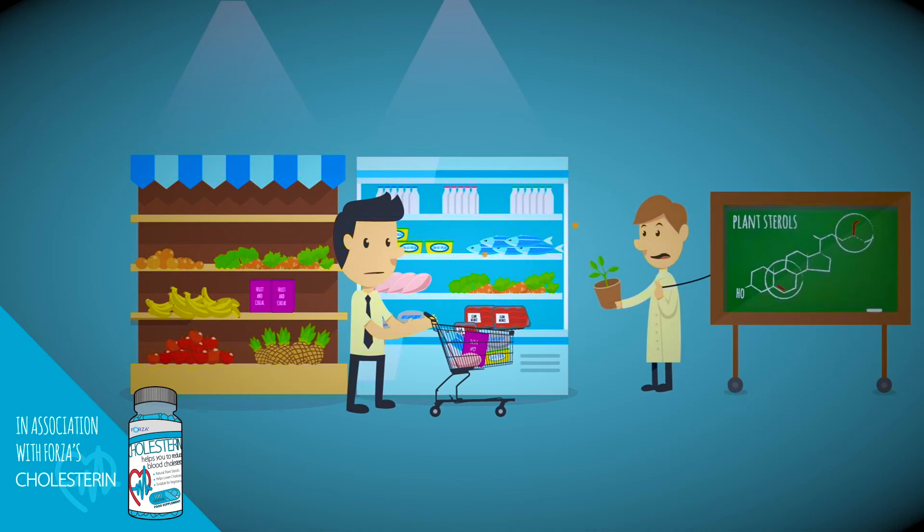Another easy way to improve your diet is to look out for cholesterol-lowering foods, such as those containing plant sterols. A daily intake of between 1.5 and 2.4 grams of plant sterols has been scientifically proven to actively lower cholesterol levels.